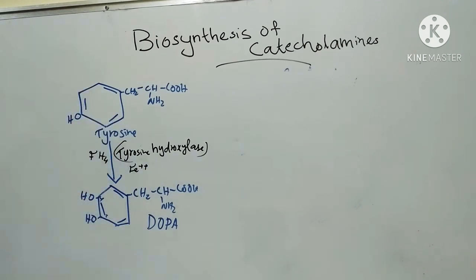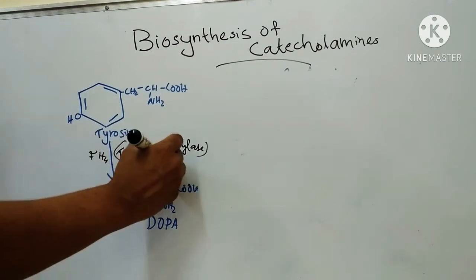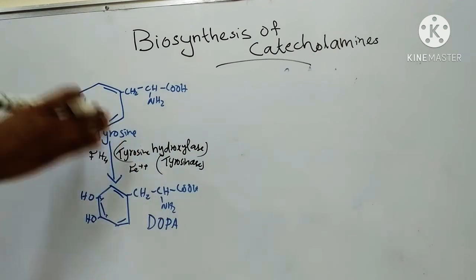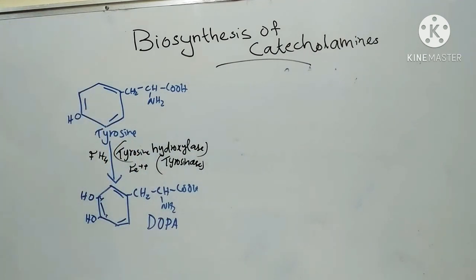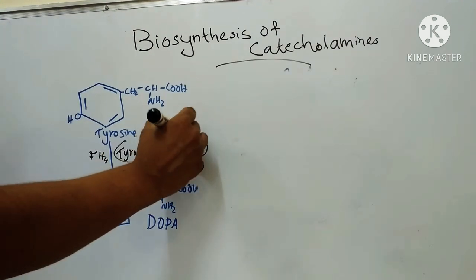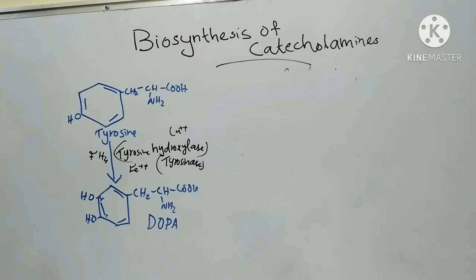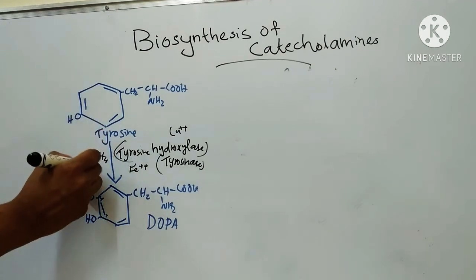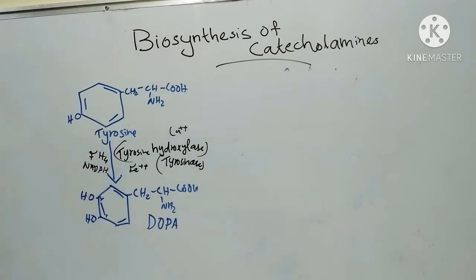Tyrosine hydroxylase is also known as tyrosinase. It is the rate-limiting enzyme in the biosynthetic pathway and is a copper-containing metalloenzyme. This first step — the formation of DOPA, or 3,4-dihydroxyphenylalanine — takes place in the mitochondria.